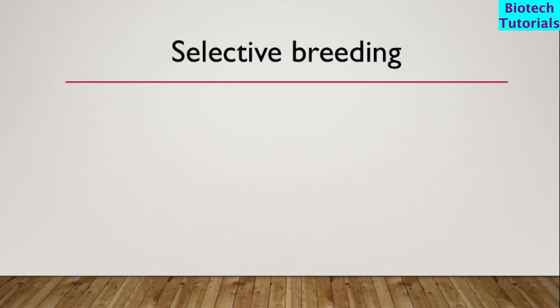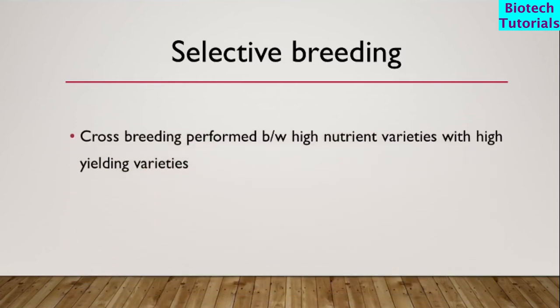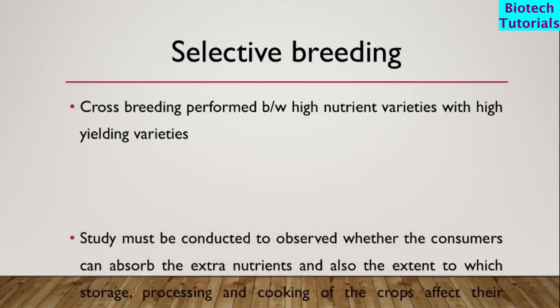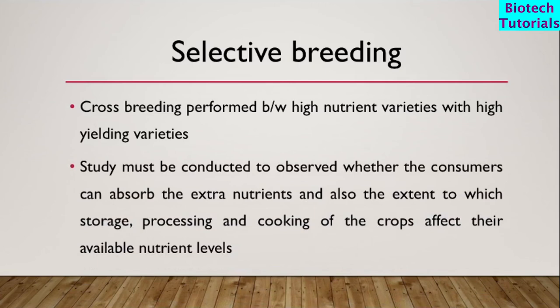First, what is selective breeding? It involves cross breeding between high nutrient varieties with high yielding varieties. A study must be conducted to observe whether the consumer can absorb the extra nutrients, and also the extent to which storage, processing, and cooking of the crops affect their available nutrient levels.